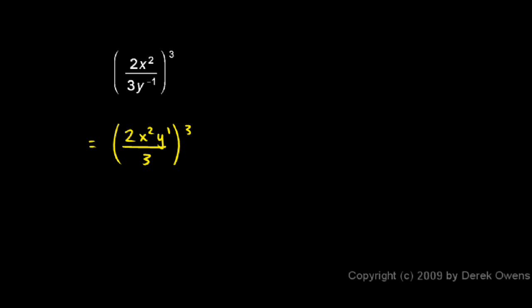So this ends up equaling two cubed times x to the sixth. This is because an x squared cubed, here we have an exponent being raised to another power. So we multiply the exponents. So that became an x to the sixth. And then it's times a y cubed all over a three cubed.